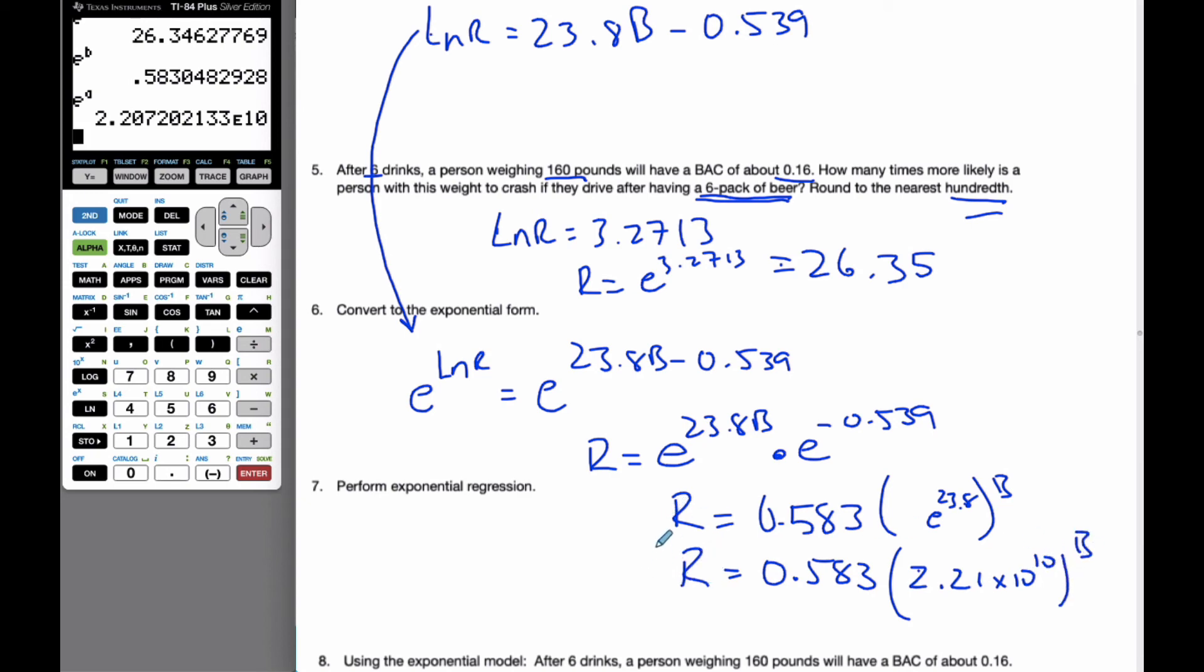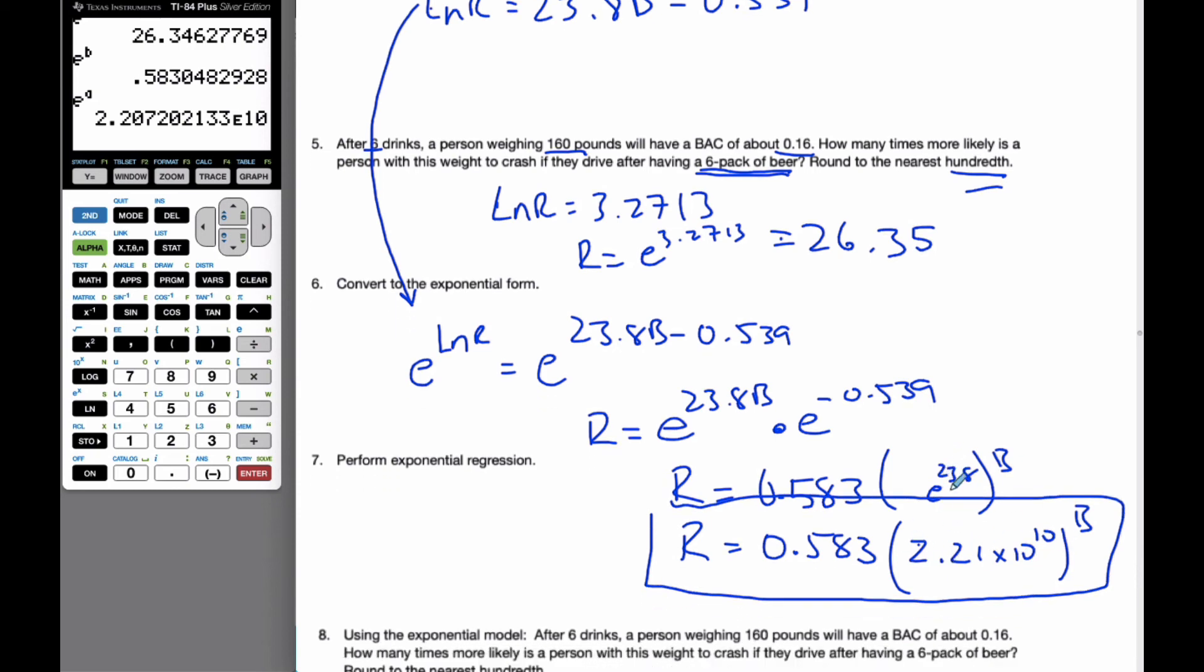So here is my exponential form of the equation. And I can have it as here, where this is my rate, or I could also leave it with e, where it would be 0.583 times e to the 23.8B. Either one, both of these can be useful.